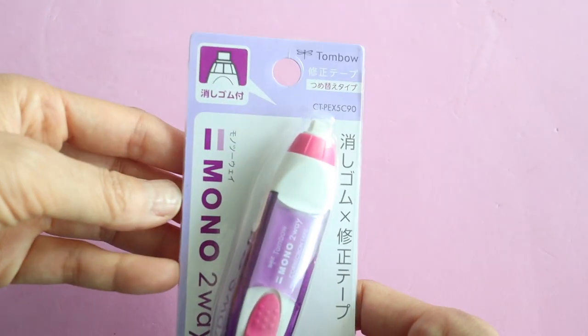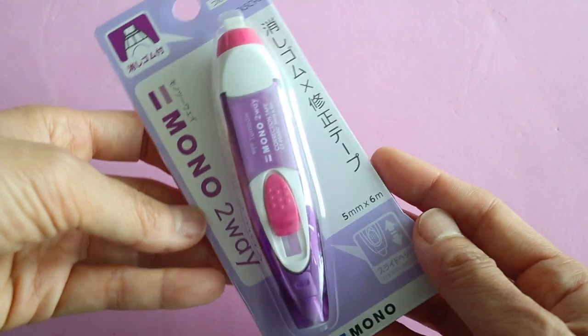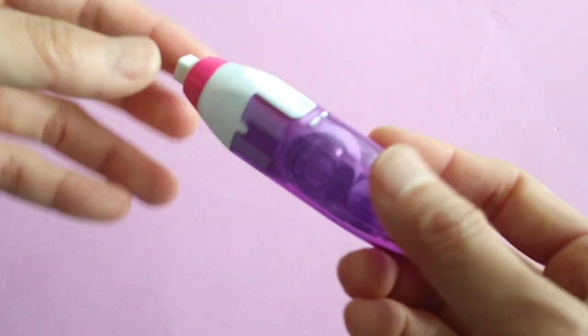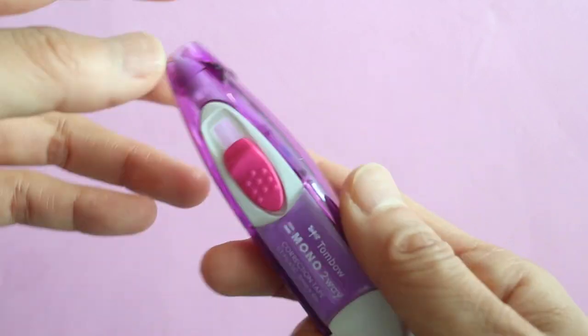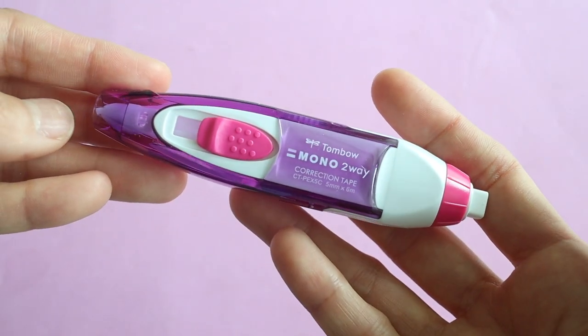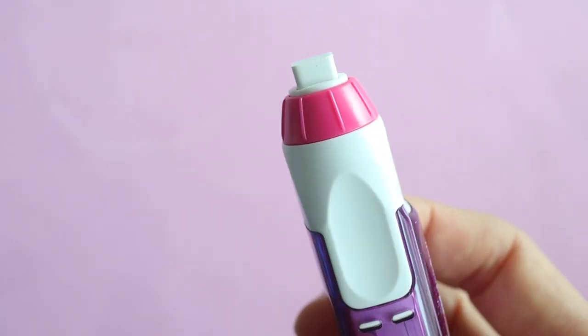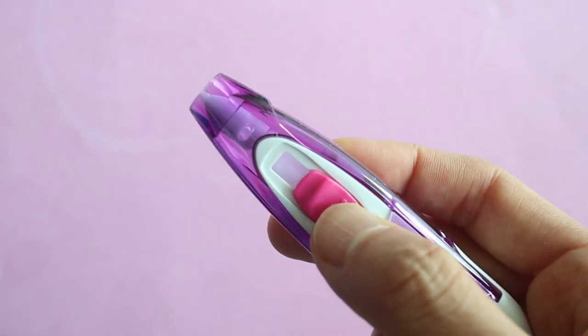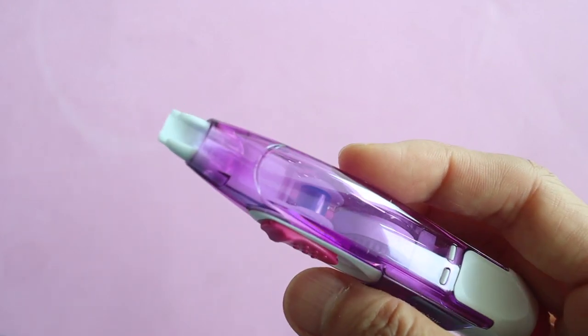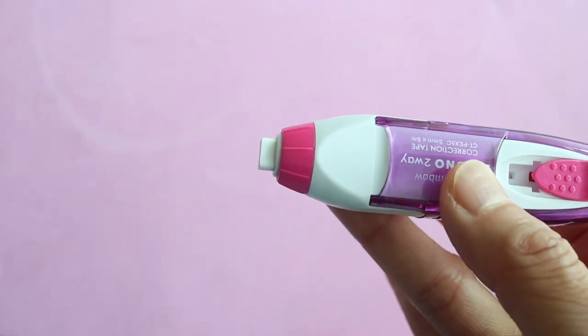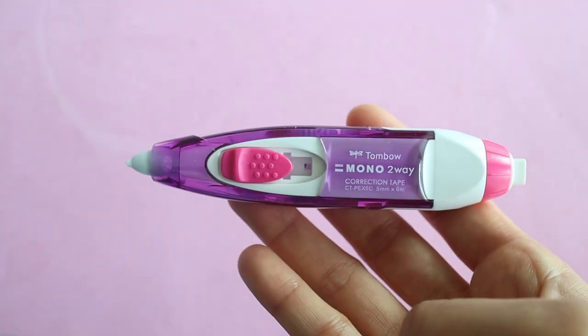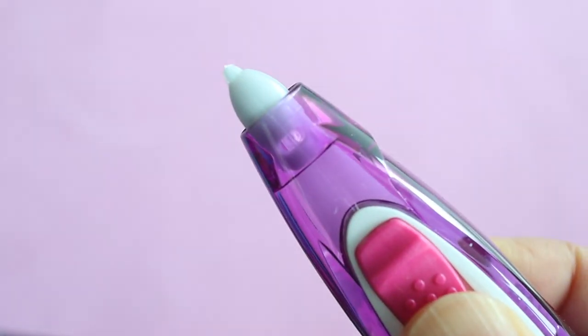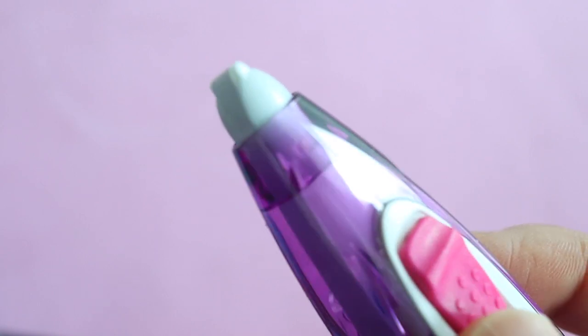This is the mono two-way correction tape and eraser all in one little device. So if you use a pen and a pencil, then you can compress your correction tools into this little thing. On one end, you have this eraser which is square so you can be really precise with your erasing. And then on the other end, you have a correction tape which is retractable. So I think this is really great because you can protect both the eraser as well as the correction tape while it's in your pencil case.